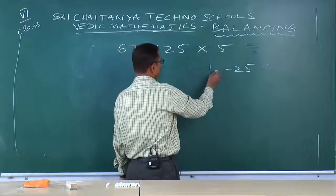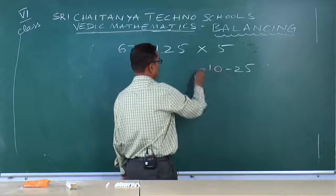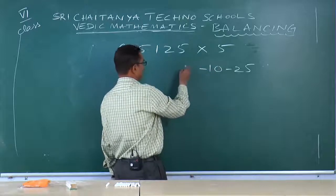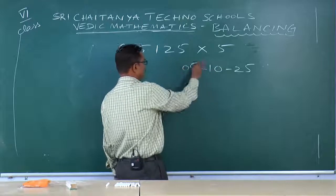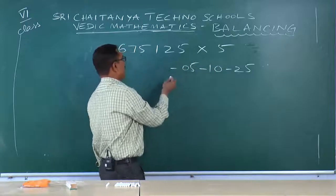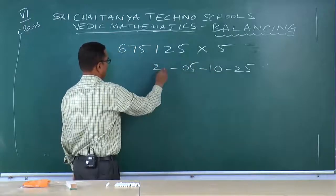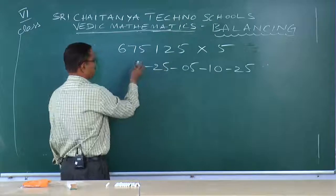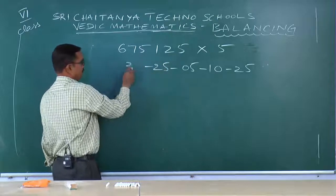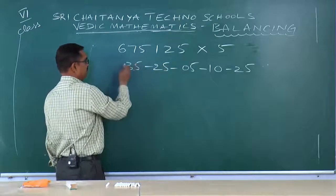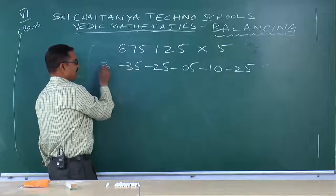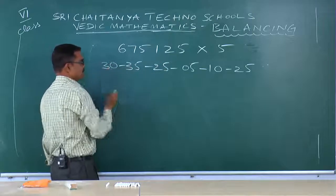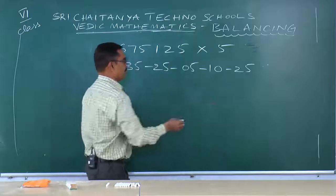5 into 2: 10. 5 into 1: 0, 5. 5 into 5: 25. 5 into 7: 35. 5 into 6: 30.